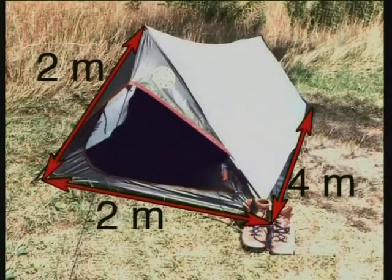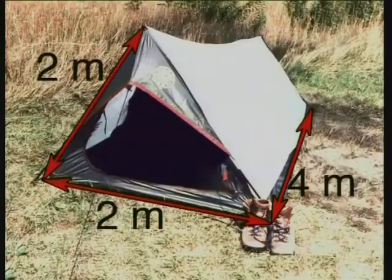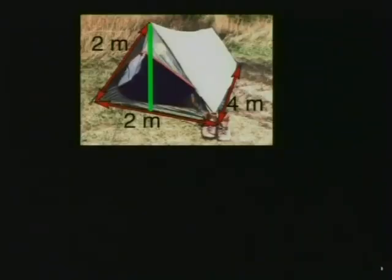Although you can't see the inside of the tent, it does have a floor. Let's solve this problem together. We know that this shape is a right triangular prism.